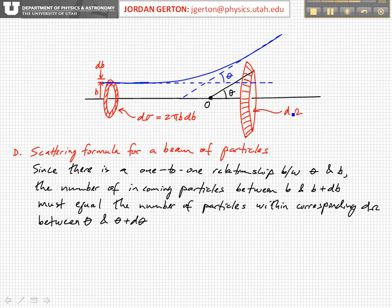Okay, and so we can write an expression for that. So basically, the intensity of the initial beam, that's the number of particles per unit area per unit time, times 2 pi B db, that's the number of particles per unit time which pass through this differential cross-sectional area, d sigma.